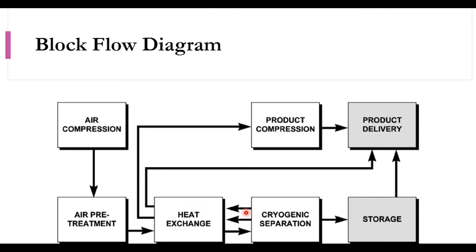There are three inlets and three outlets in the heat exchanger: one hot inlet and two cold inlets. After heat exchange, the products are compressed and sent to product delivery. Some product can be directly drawn and sent to storage and then delivered. There are different configurations available in the literature — we can take the product directly to storage or compress it and then send to delivery — and we will be discussing one configuration today.